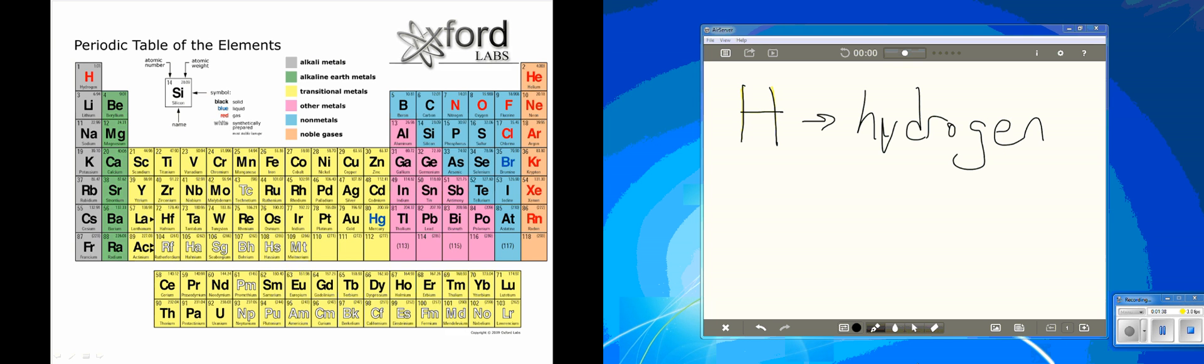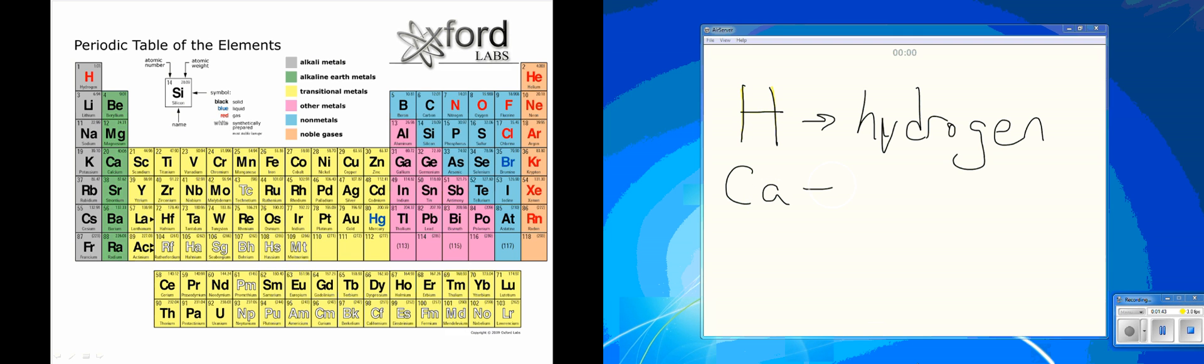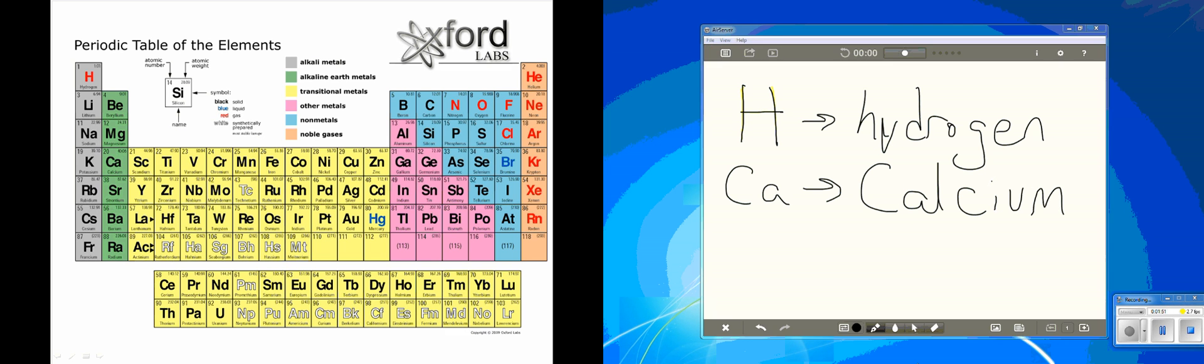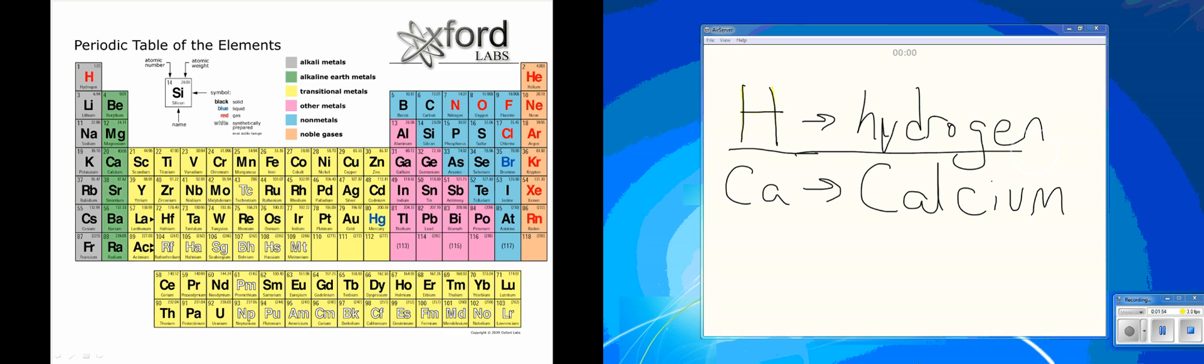Now if we go by ones that have the second letter, we can look at Ca. Ca is element number 20, and that is calcium. So again, we have one named just by the first letter—hydrogen—and one named by the first and second letter within its name—calcium.